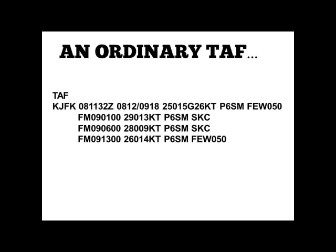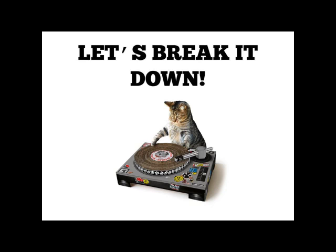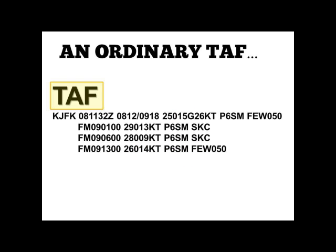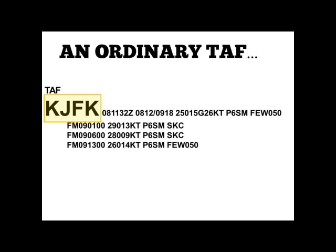So let's break down the TAF. The highlighted part here tells you the type of report, so in this case it's a Terminal Airdrome Forecast. The next part is the International Civil Aviation Organization Station Identifier, so we're looking at the TAF for John F. Kennedy International Airport in Queens, New York.